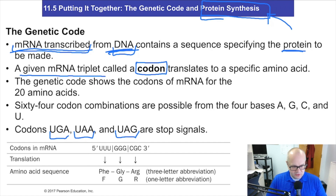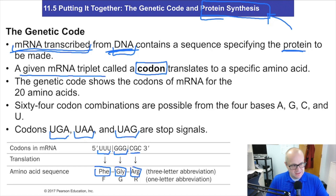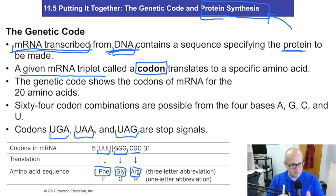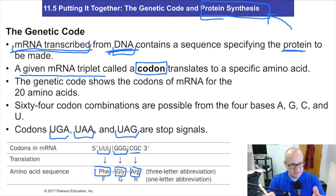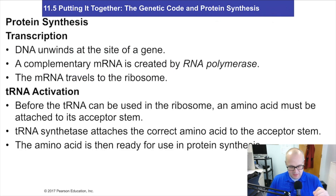For example, if I had a codon UUU, that translates into phenylalanine. If I have GGG, that translates into glycine. If I have CGC, that's an arginine. So the codon — the three base pairs as part of a messenger RNA — those base pairs will translate using tRNA to a specific amino acid.